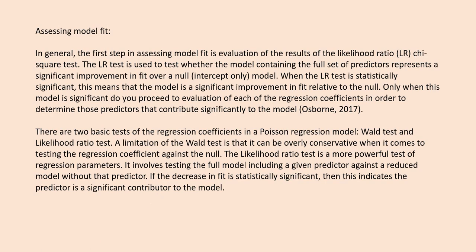Assessing model fit: the first step is evaluation of the results of the likelihood ratio chi-square test, which evaluates whether the model containing the full set of predictors represents a significant improvement in fit over a null or intercept-only model. When the likelihood ratio test is statistically significant, you proceed to evaluation of each of the regression coefficients to determine those predictors that contribute significantly to the model. There are two basic tests of the regression coefficients: the Wald test and the likelihood ratio test. The Wald test can be overly conservative, whereas the likelihood ratio test is more powerful — it involves testing the full model including a given predictor against a reduced model without that predictor. If the decrease in fit through removal is statistically significant, the predictor is a significant contributor to the model.